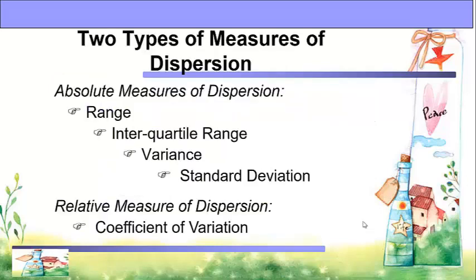The types of measures of dispersion: absolute measures of dispersion and relative measures of dispersion. The absolute measures of dispersion include the range, interquartile range, variance, and standard deviation. While the relative measure of dispersion is the coefficient of variation.